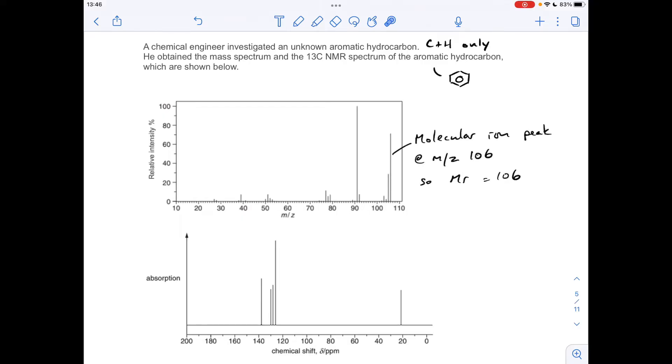So moving on to the carbon-13 NMR spectrum, you can see from the number of peaks, we've got five different carbon environments in this molecule. We can also say that one of the environments is a carbon-to-carbon environment. Four of the environments are aromatic carbons.